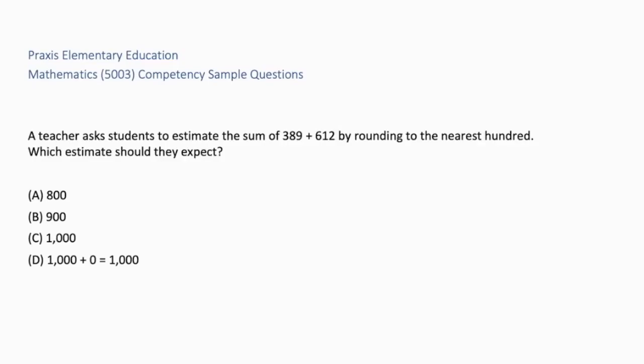A teacher asks students to estimate the sum of 389 plus 612 by rounding to the nearest hundred. Which estimate should they expect? A, 800. B, 900. C, 1,000. Or D, 1,000 plus 0 equals 1,000.